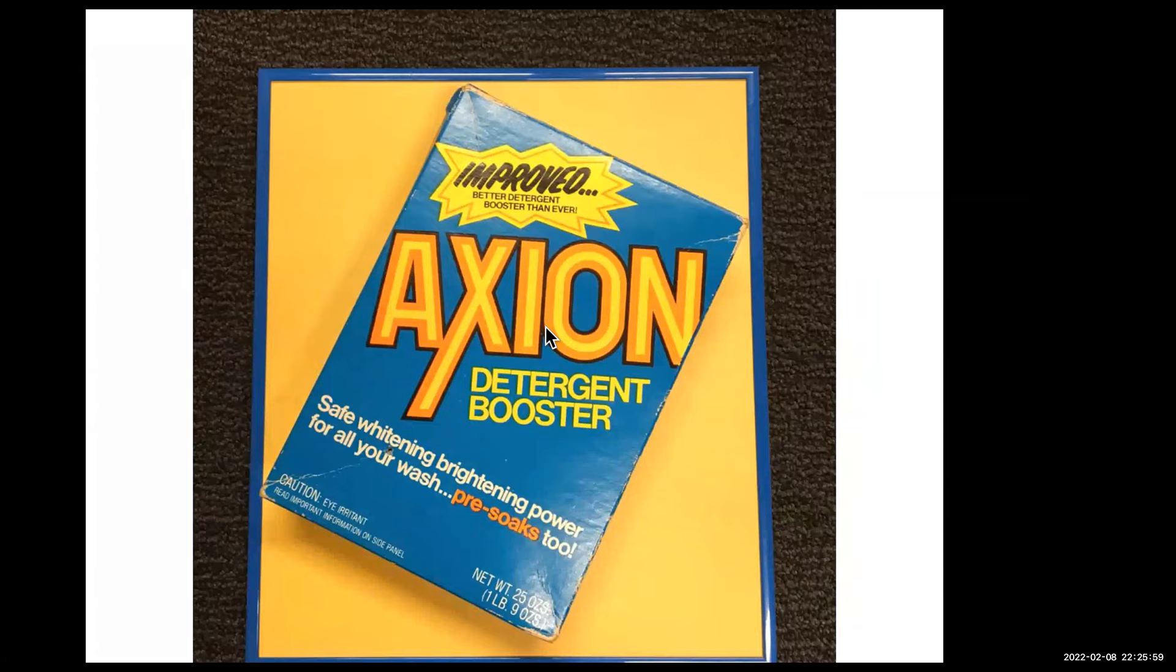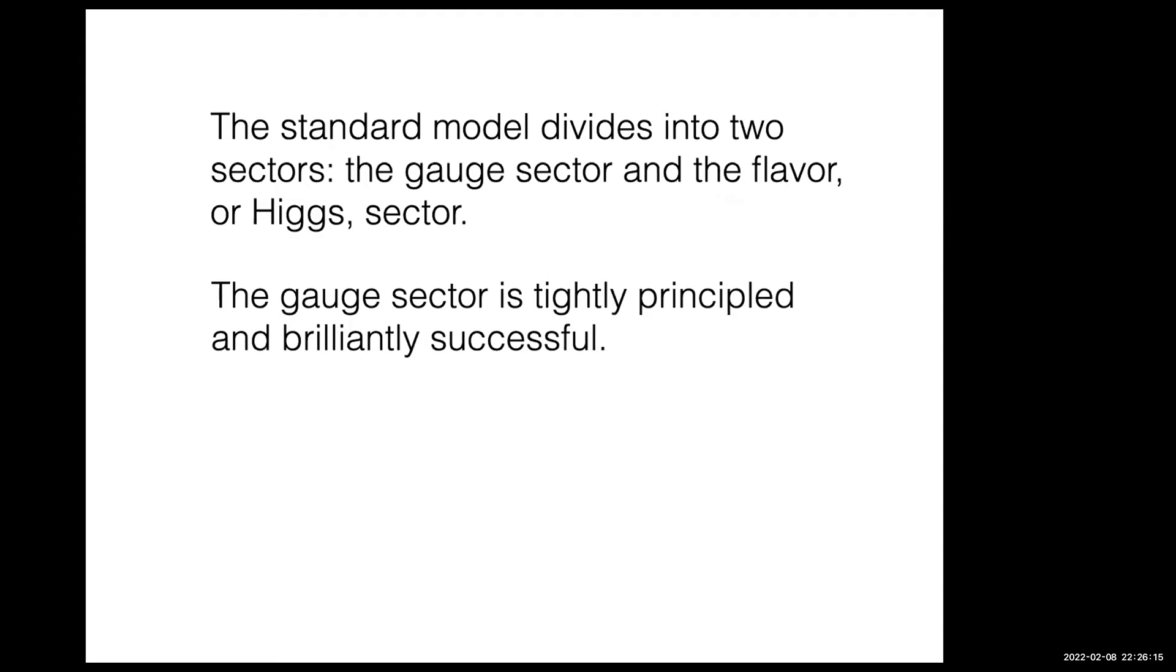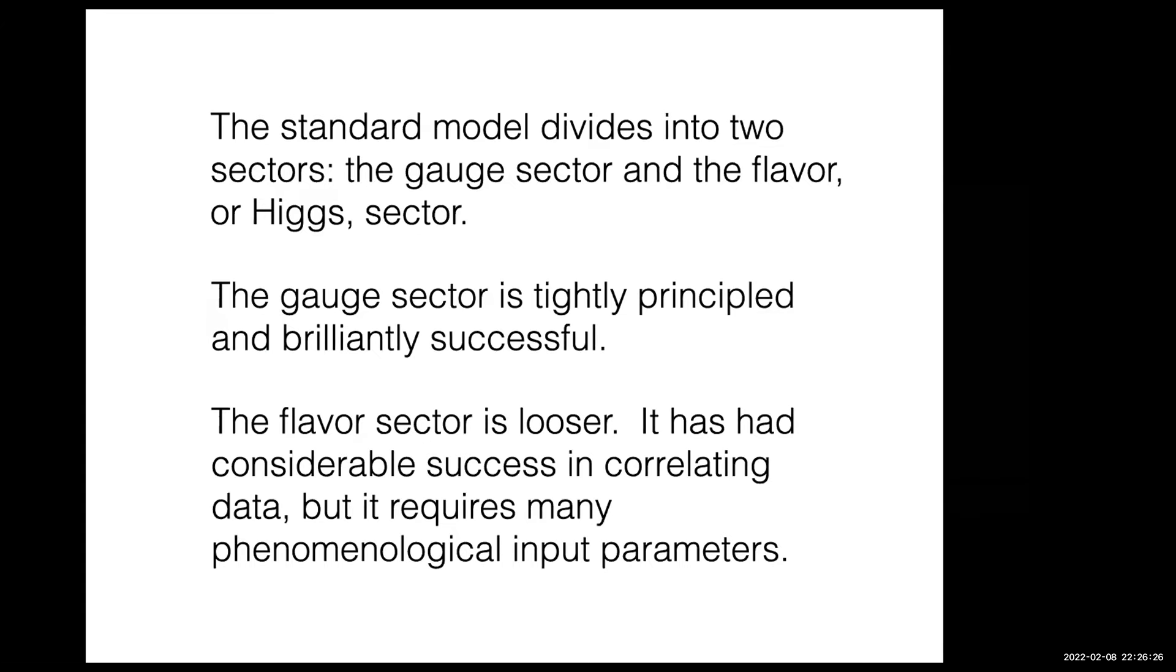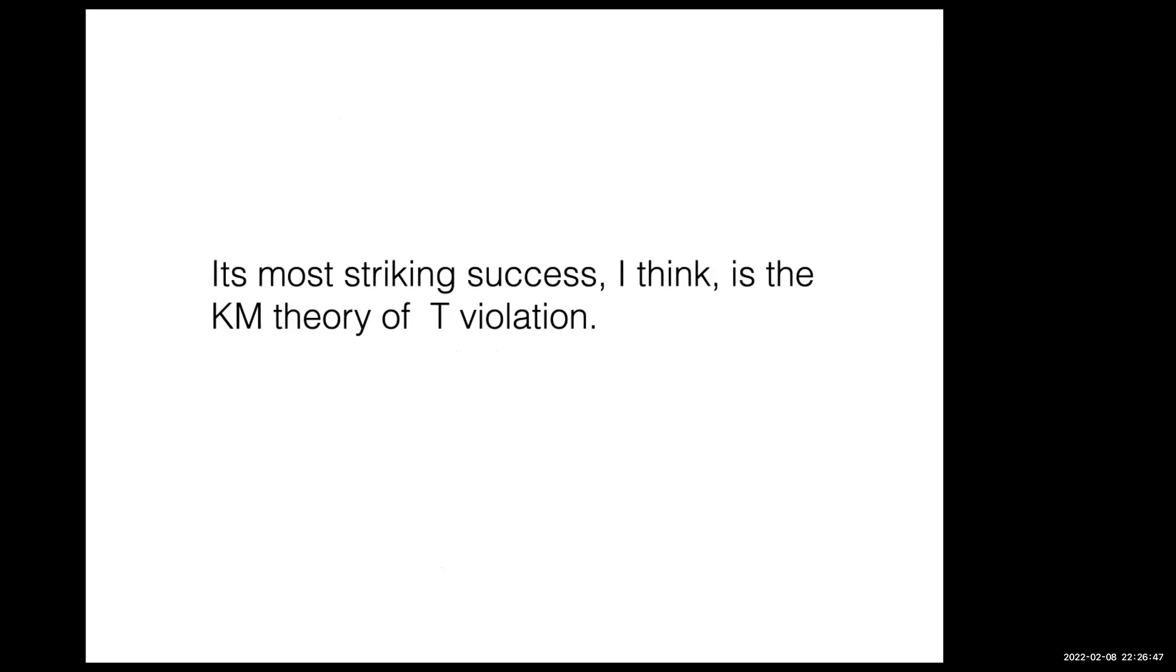I was inspired by a laundry detergent, because it cleans up the problem. The standard model divides into two sectors: the gauge sector and the flavor or Higgs sector. The gauge sector is tightly principled and brilliantly successful. The flavor sector is much looser. It's been very successful in correlating data, organizing data about the masses of different quarks and how one decays into another, and similarly for leptons, but it has many phenomenological input parameters.